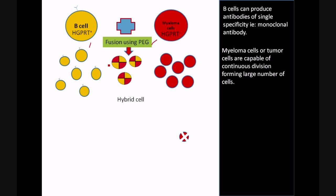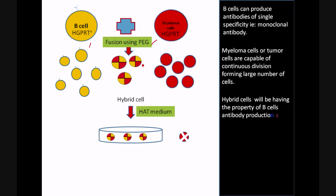This is done by using a selective medium called HAT medium, and in HAT medium only the hybrid cells can grow. The intention of this technology is we are generating a hybrid cell that has the capability of antibody synthesis from B cells.